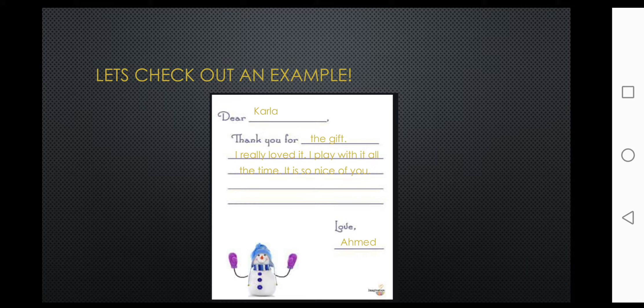Next. Here is another example. So dear Carla. Dear Carla. So I'm sending this letter, this thank you note, will be sent to a girl named Carla. So dear Carla and a comma. Thank you for, thank you for, you start by saying thank you for, for what? For the gift. I really loved it. I play with it all the time. It's so nice of you.